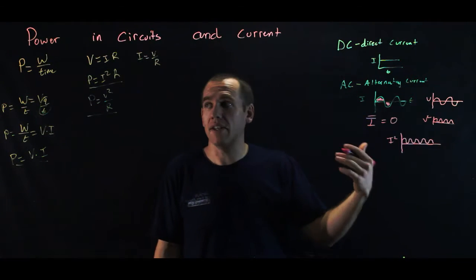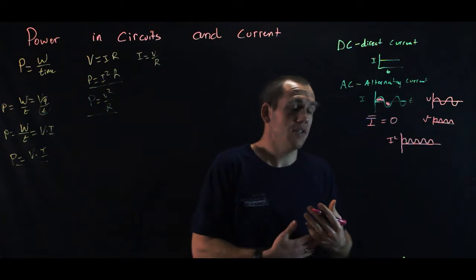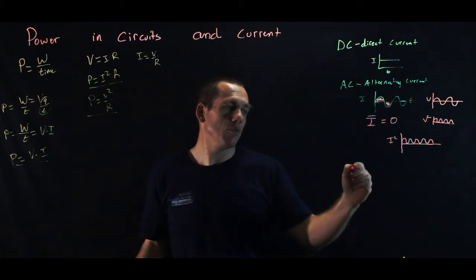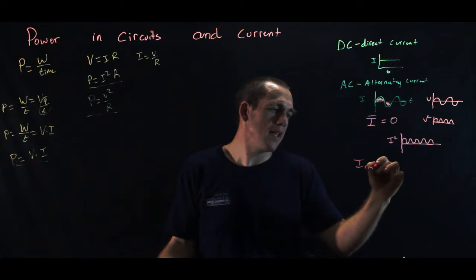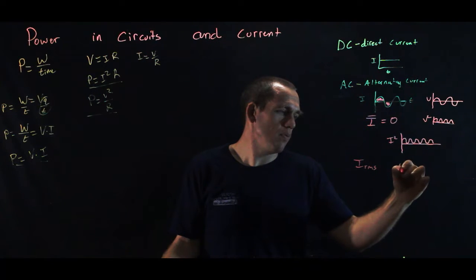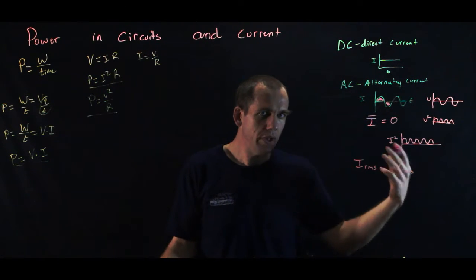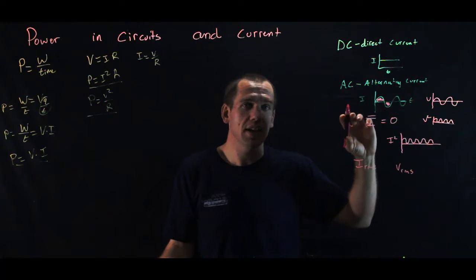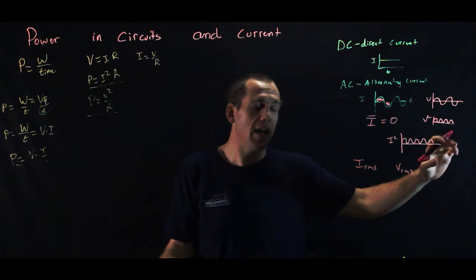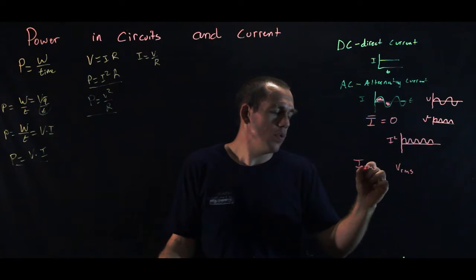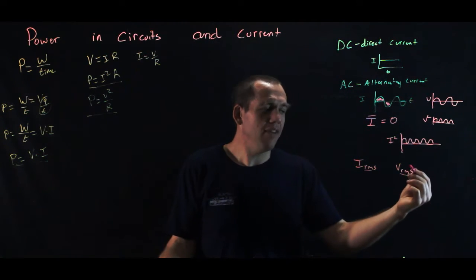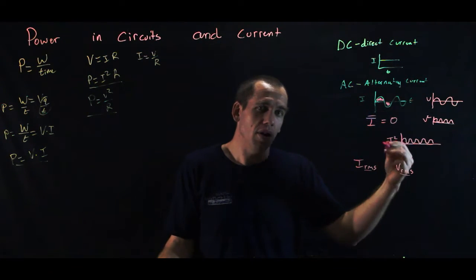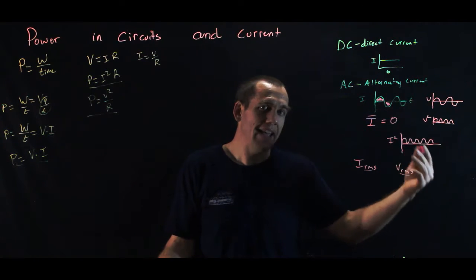So what we use when we calculate power on an alternating current circuit is the same equation, except we use what's called the root mean square, or RMS current, and we use the root mean square, or RMS voltage. And essentially what we're doing is we're finding average power. Because we're taking power over a duration of time. And so the root mean square is exactly what it sounds like. It's the square root of the square of the voltage, and we're finding the average.